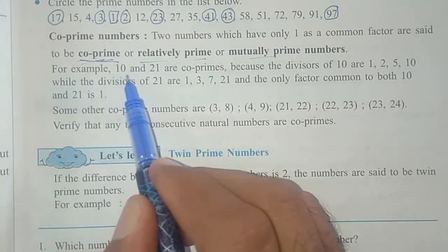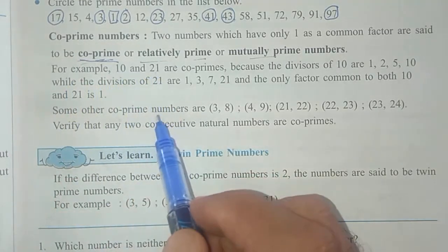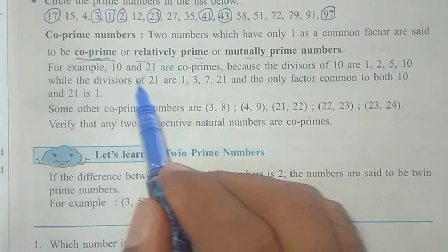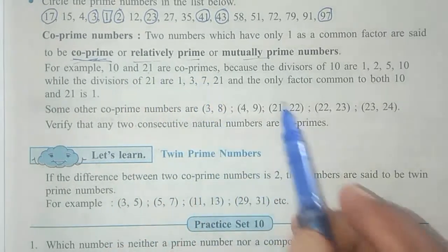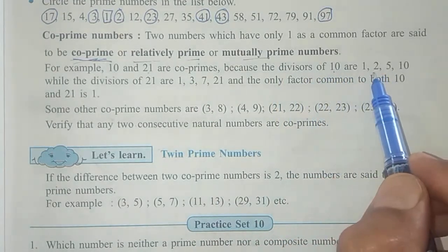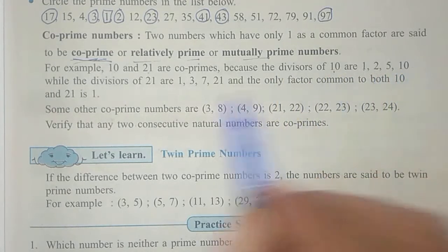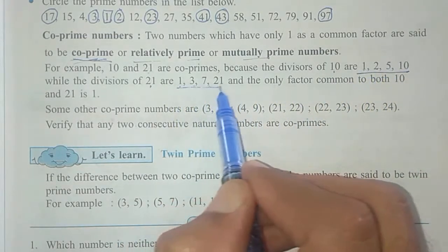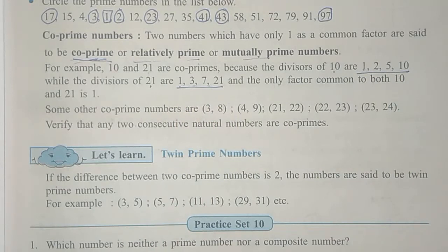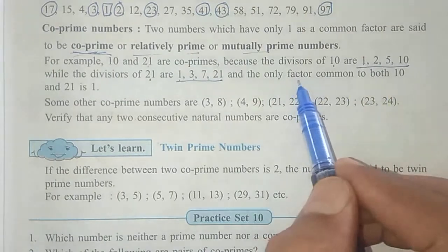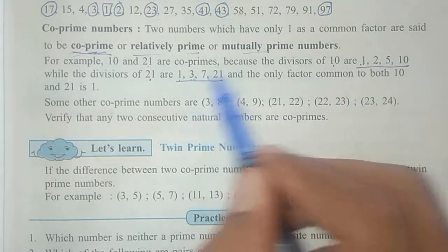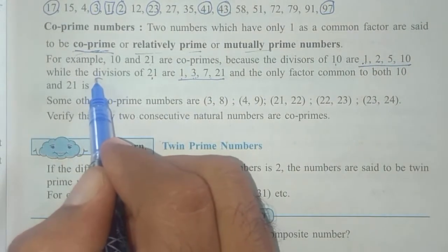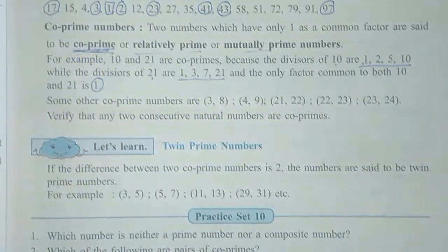Example: 10 and 21. Both these numbers are composite numbers — neither is a prime number — yet they are co-primes. The reason: divisors of 10 are 1, 2, 5, 10. Divisors of 21 are 1, 3, 7, 21. If you find the common factors, only 1 is common. 3, 7, 21, 2, 5, 10 — none of these are common. So only the common factor is 1, and such numbers are called co-prime numbers.